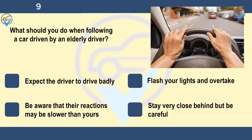What should you do when following a car driven by an elderly driver? Expect the driver to drive badly, flash your lights and overtake, be aware that their reactions may be slower than yours, or stay very close behind but be careful. You must show consideration to other road users. The reactions of older drivers may be slower and they might need more time to deal with a situation. Be tolerant and don't lose patience or show annoyance.